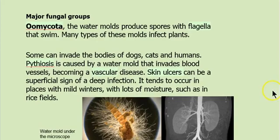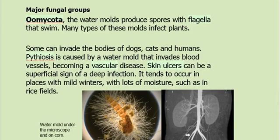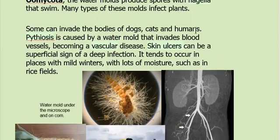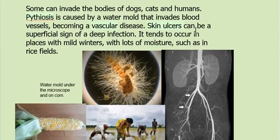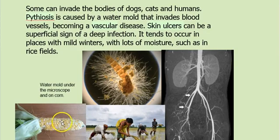Let's dive into the groups, because not all fungi are the same. Some, such as the water molds — Oomycota — their spores have little swimming flagella. You can imagine these guys are in water; they infect plants a lot. You'll see examples of this if you look in your refrigerator at vegetables that have been there a couple of weeks — you're going to see some slime, and that's probably a water mold.